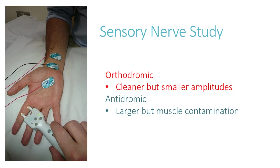We can do the tests in the opposite way — antidromically — which has the advantage of providing a larger amplitude response because there is less subcutaneous tissue between the recording electrodes over the fingers compared to the wrist. However, it would contain muscle contamination, because stimulating the nerve at the wrist would also cause contraction of the median innervated muscles of the hand, contaminating the signal. Each has its own advantages and disadvantages, but in the UK we try to do finger two and finger five orthodromically.